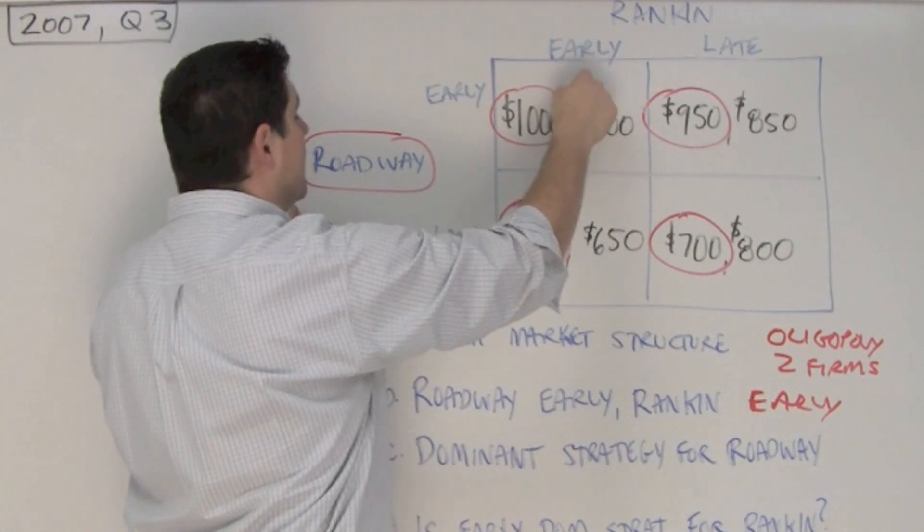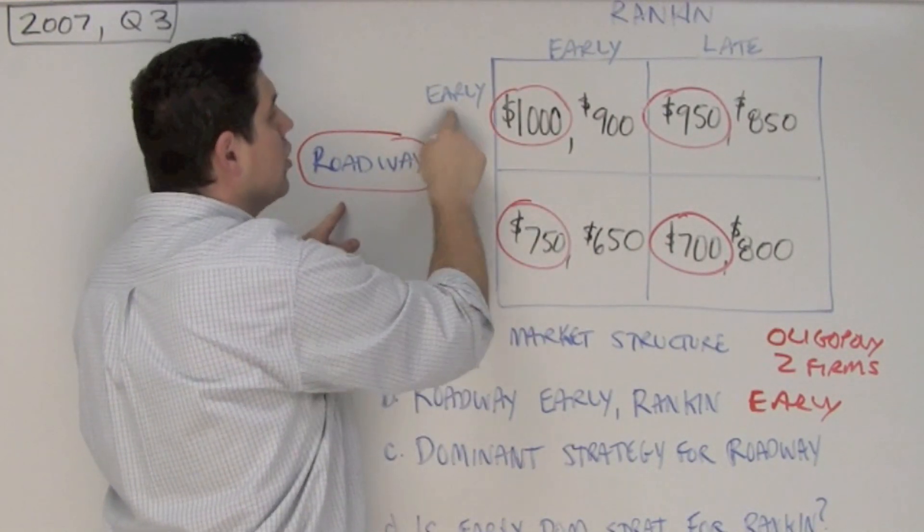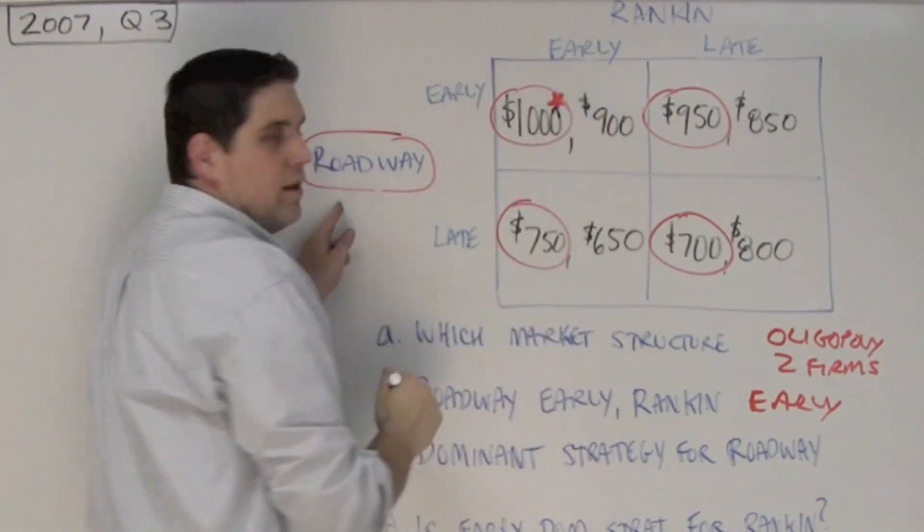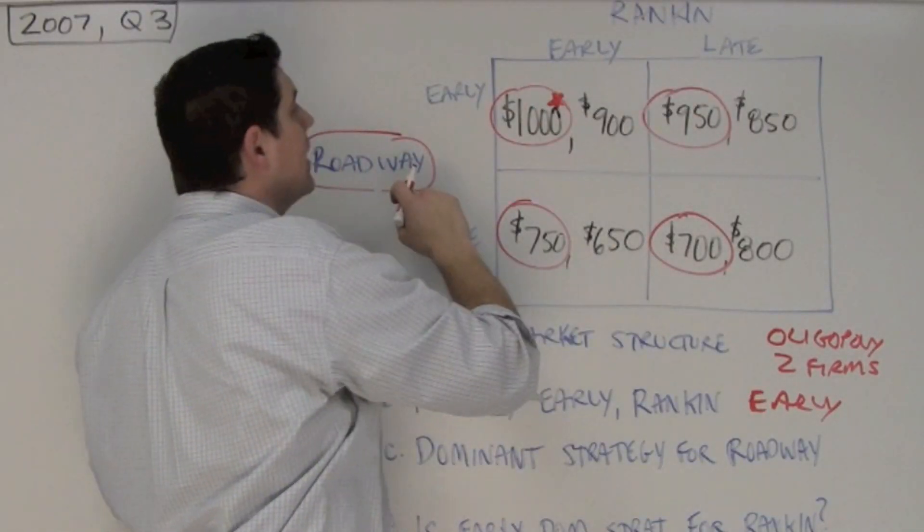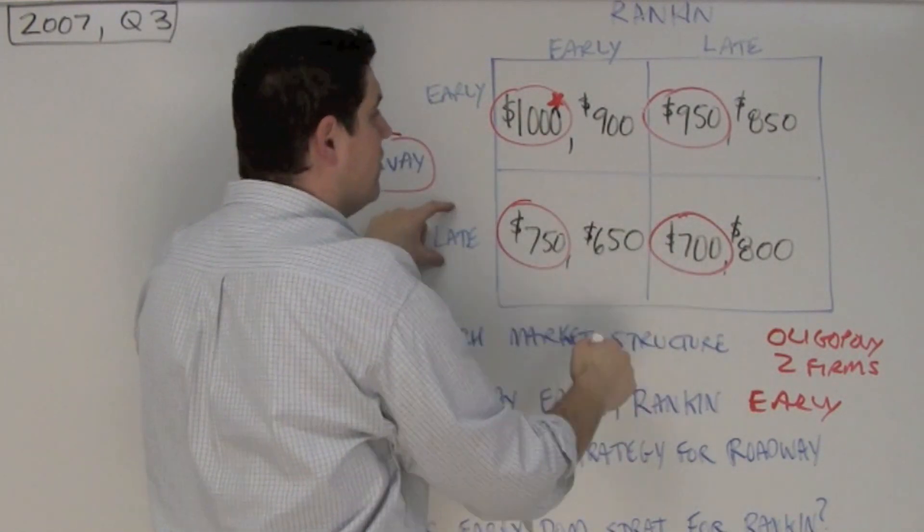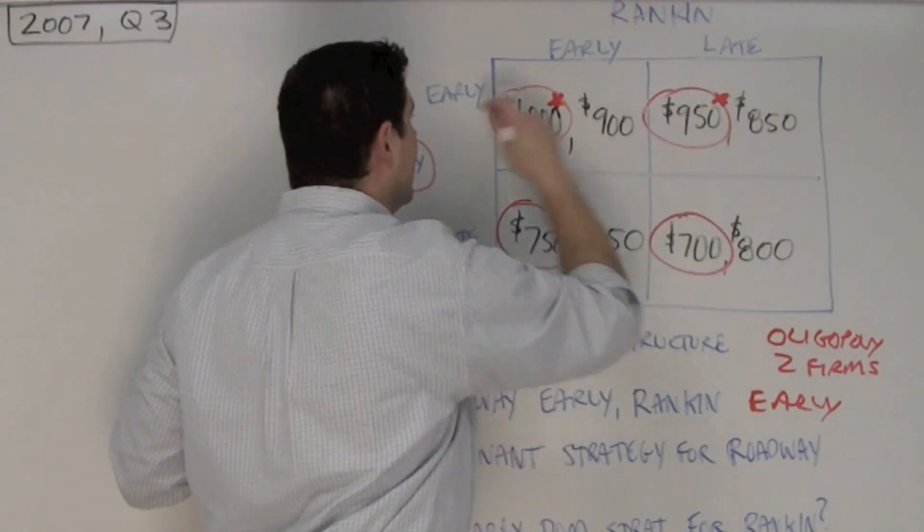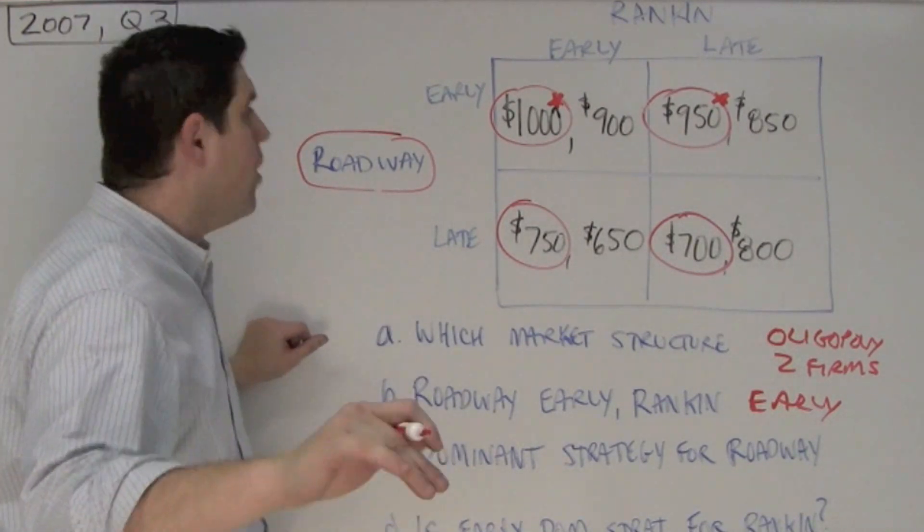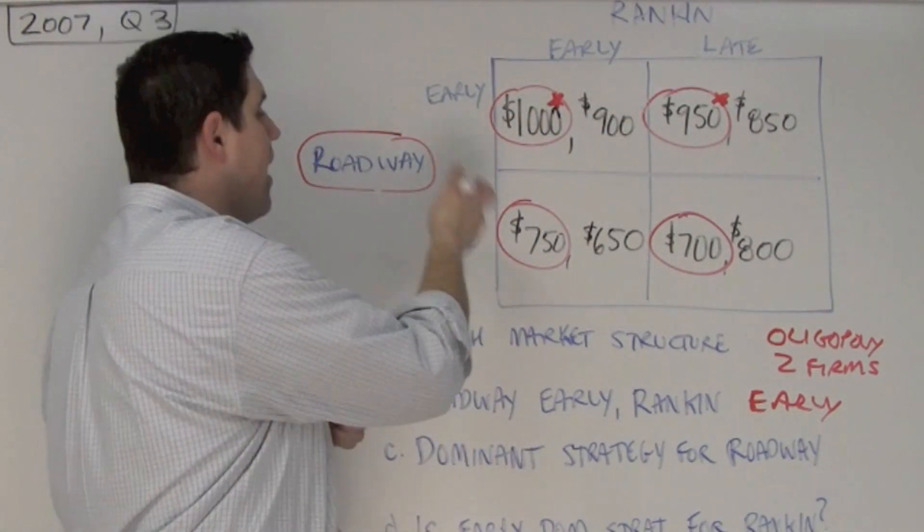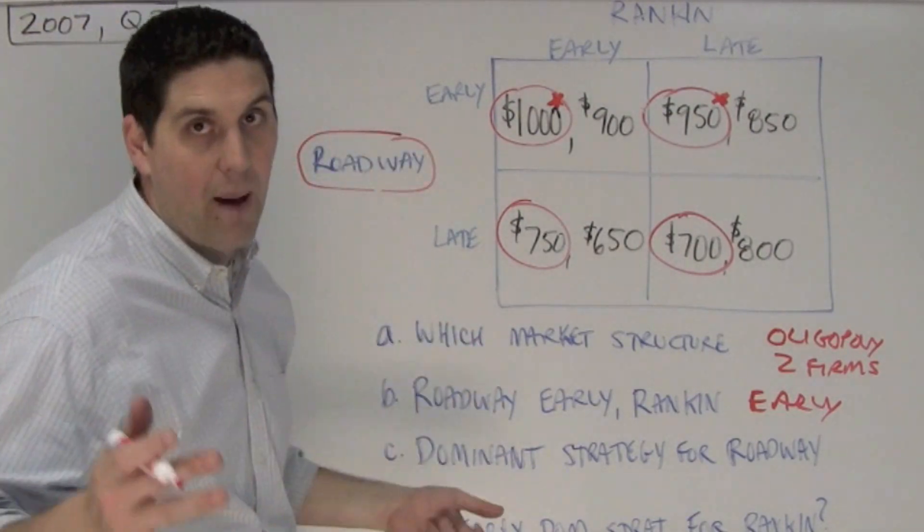The dominant strategy for Roadway, well, if Rankin goes early, Roadway can choose between going early, getting 1,000, and going late and getting 750. Well, Roadway would rather go early. If Rankin goes late, Roadway can choose between going early and getting 950 or going late and getting 700. Well, they'd rather go early and get 950. Now notice, Roadway should always go early, no matter what. There's no reason for them ever to go late, and so early is their dominant strategy.